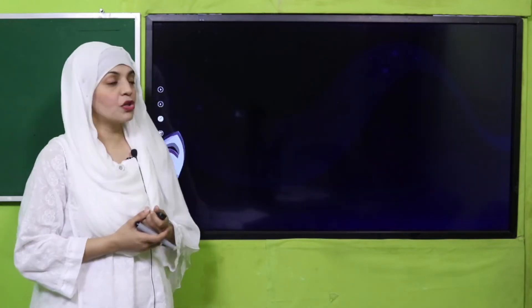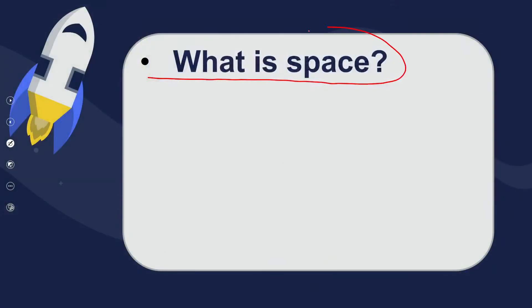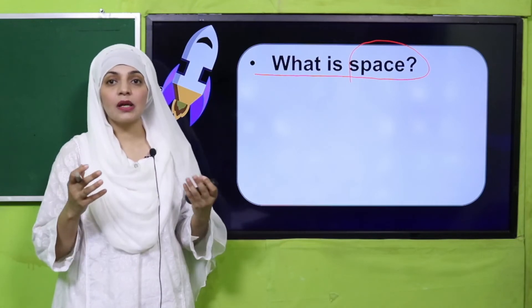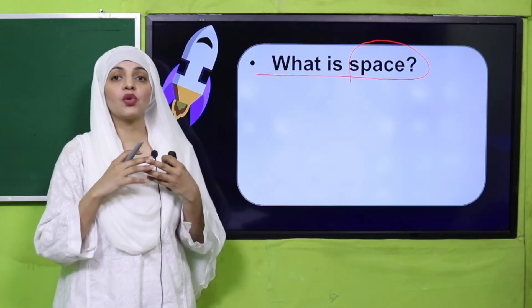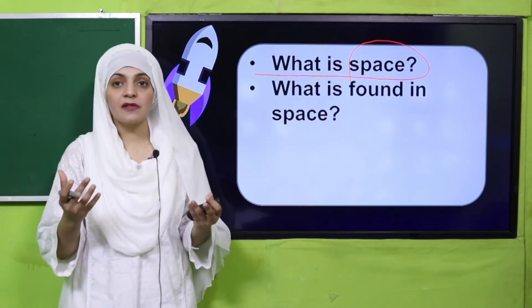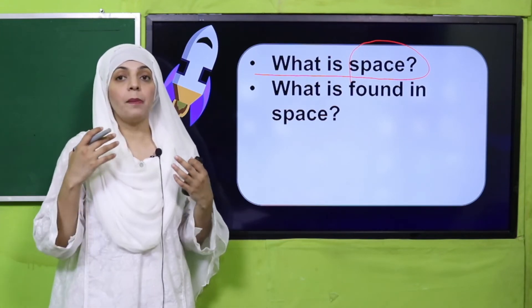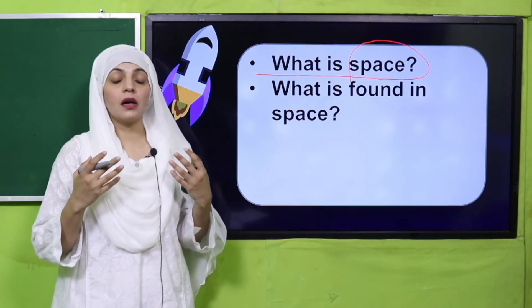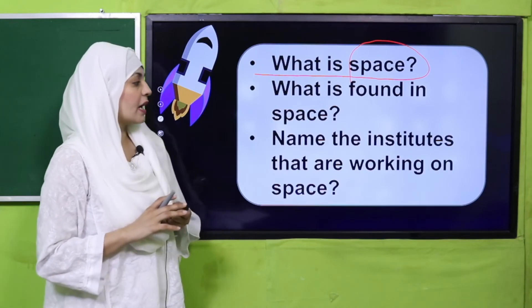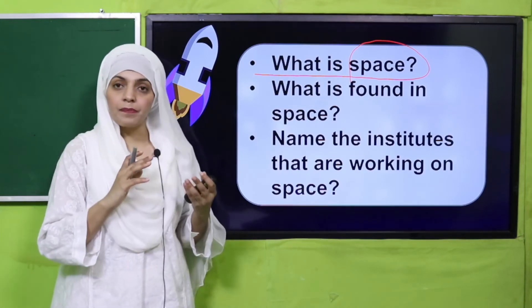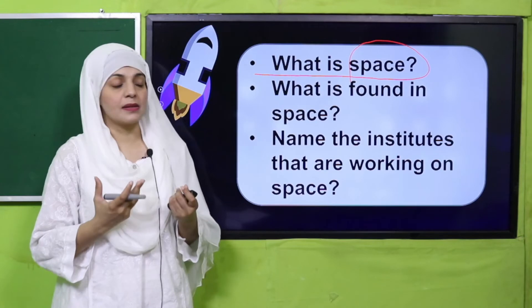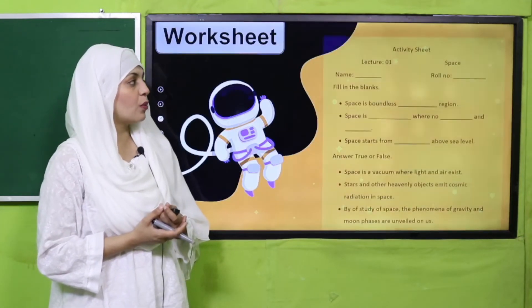Now is the time for evaluation. What is space? Space is a vacuum which is limitless, which has no boundaries, no light, no heat, and no gravity. What is found in space? Stars, galaxies, heavenly bodies, planets, satellites, asteroids, and comets are all found in space. Name the institutes working on space: NASA, SPARCO, and Pakistan Space Agency.